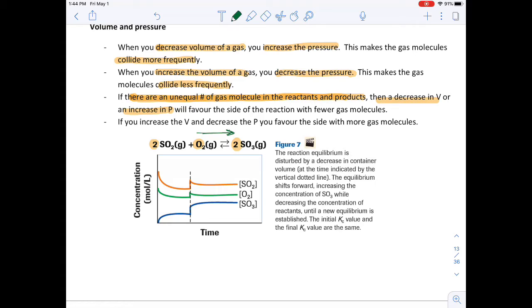If you increase the volume and decrease the pressure, you favor the side with more gas molecules. So if we've got the gym available, why wouldn't we have a party? If we end up having an increase in volume, the reaction is going to shift to the side with more gas particles. Now, if there was an equal number of gas particles in the reactants and products, it's not going to change the equilibrium because they're going to have the same odds of colliding.